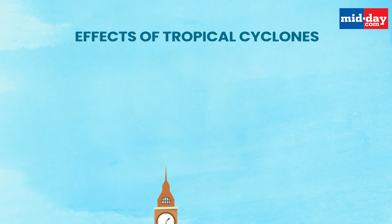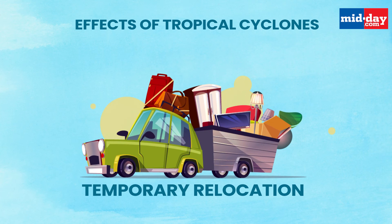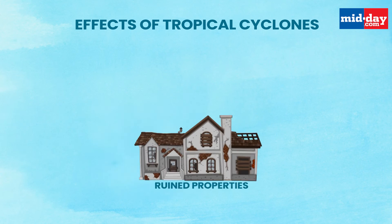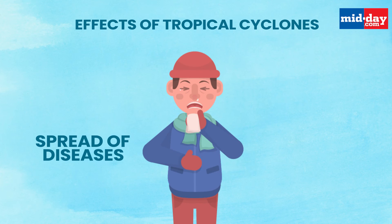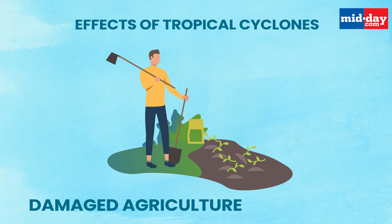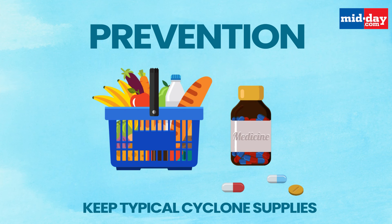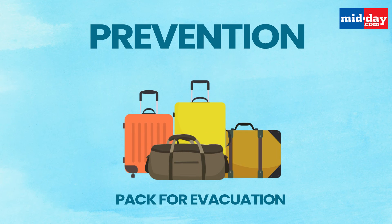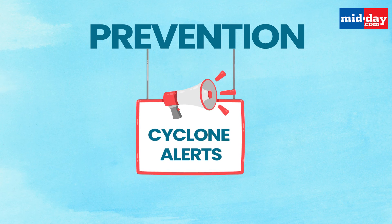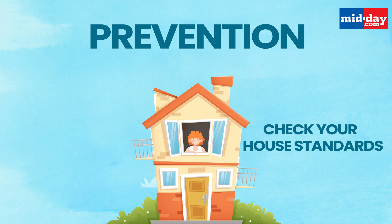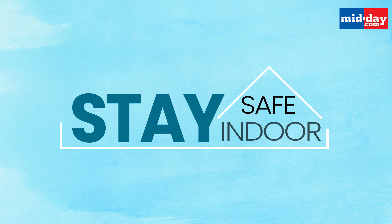Effects of cyclones include deaths, flooding, temporary relocation, ruined properties, spread of diseases, and damaged agriculture. For prevention: keep typical cyclone supplies ready, pack for evacuation, be aware of cyclone alerts, check your house standards, stay safe, and stay indoors.